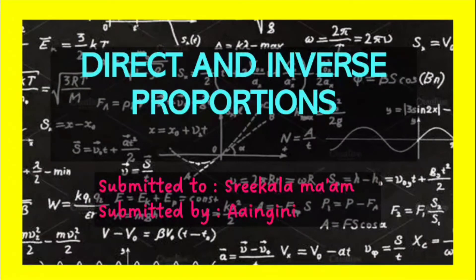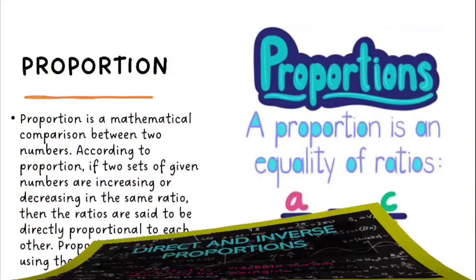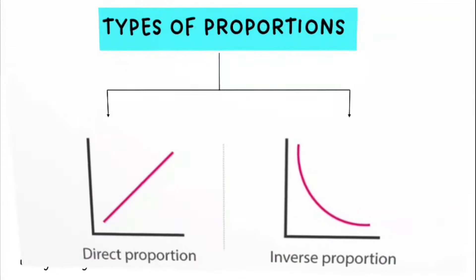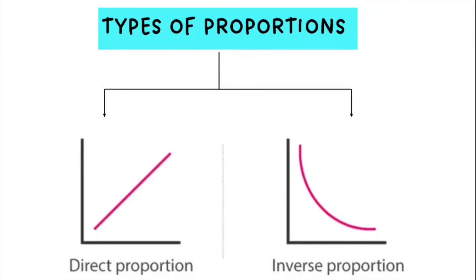Direct and Inverse Proportions. Proportion is a mathematical comparison between two numbers. According to proportions, if two sets of given numbers are increasing or decreasing in the same ratio, then the ratios are said to be directly proportional to each other. Proportions are denoted by specific symbols. There are two types of proportions: Direct Proportions and Inverse Proportions.